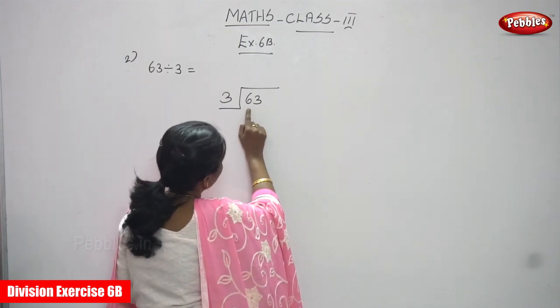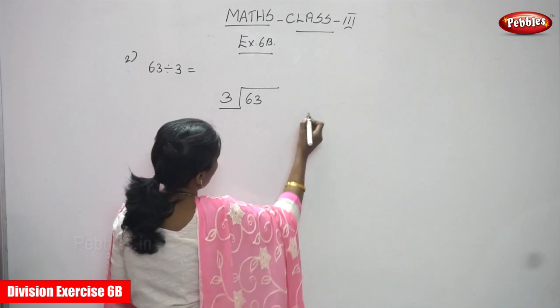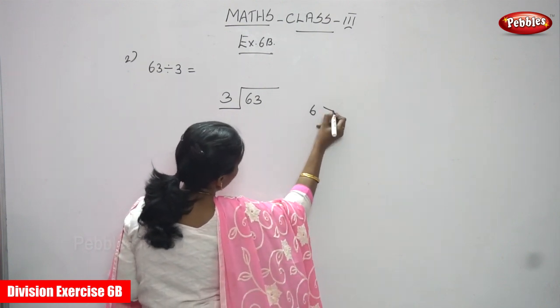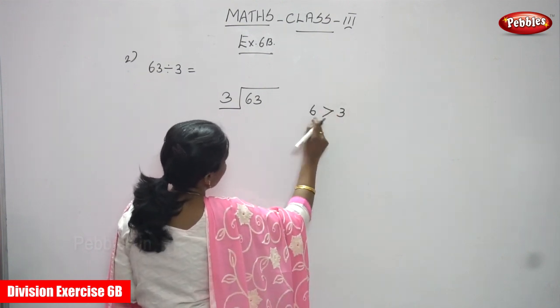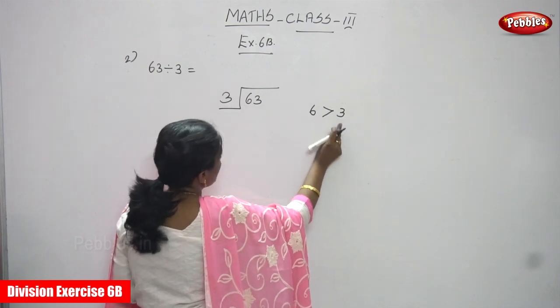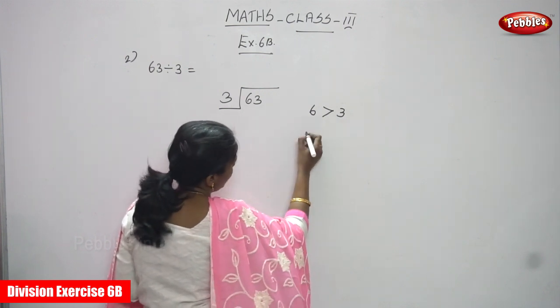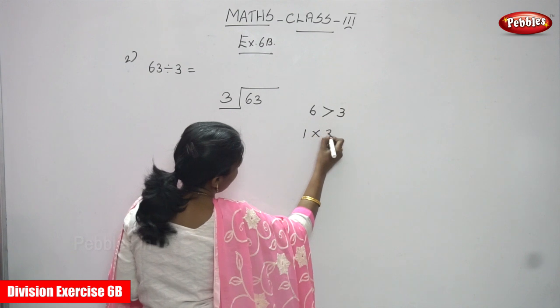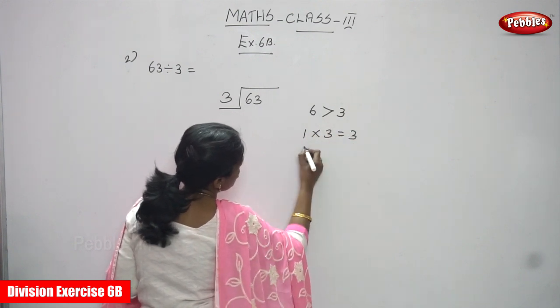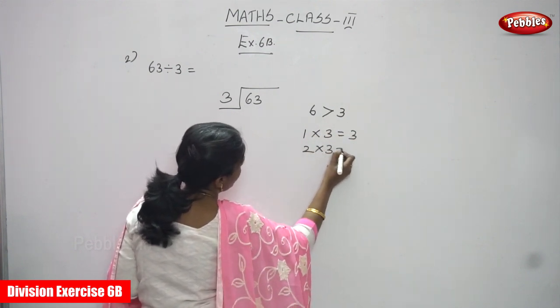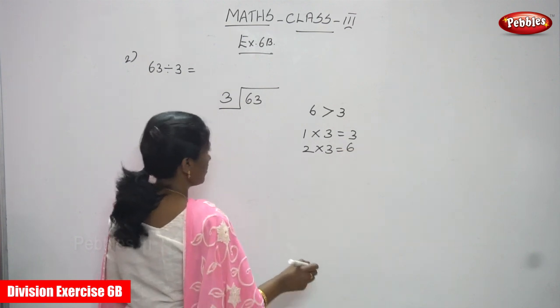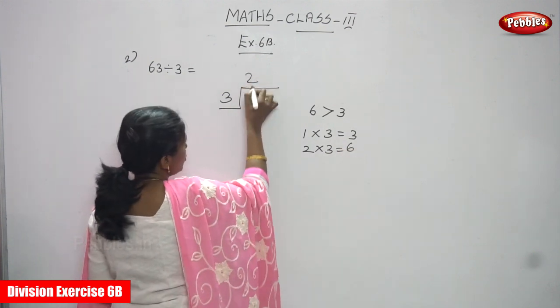First you have to take the 6, that is tens place value. 6 is greater than 3, so it is enough to divide. You must use the 3 table. Write the 3 table: 1×3=3 and 2×3=6. So 2×3=6.